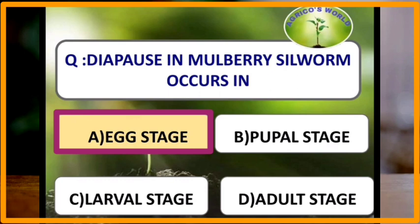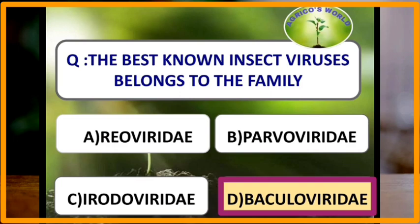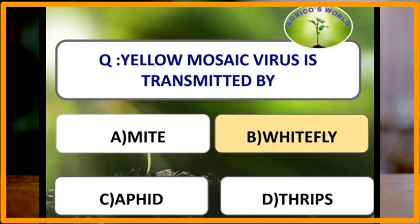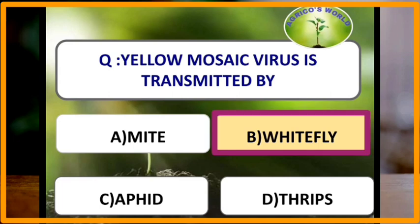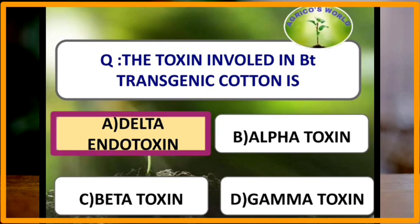The best known insect viruses belong to the family Baculoviridae. Chitin is a polymer of acetyl glucosamine. Yellow mosaic virus is transmitted by whiteflies.